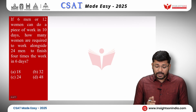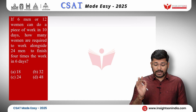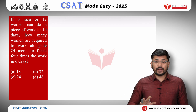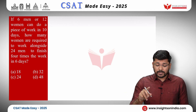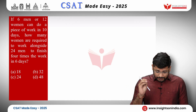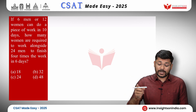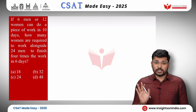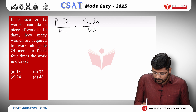We will look at the next question. If 6 men or 12 women can do a piece of work in 10 days, how many women are required to work alongside 24 men to finish 4 times the work in 6 days? Now we arrive at an exam-level question. We will use the same formula: P1D1/W1 = P2D2/W2. But what about men and women? We have only persons in the formula. We are required to find how many women, so we will consider only women.